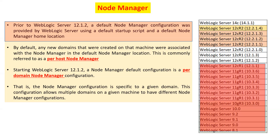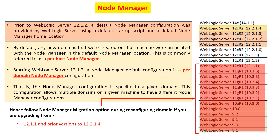A drawback of the per-host node manager was that stopping the node manager for one domain's upgrade would break functionality for all other domains. To overcome this, starting from version 12.1.2, a per-domain node manager configuration was introduced. After 12.1.2, each domain has its own separate node manager. So if you have two domains on a machine you will have two node managers; four domains means four node managers. Each domain has its own node manager configuration specific to that domain.